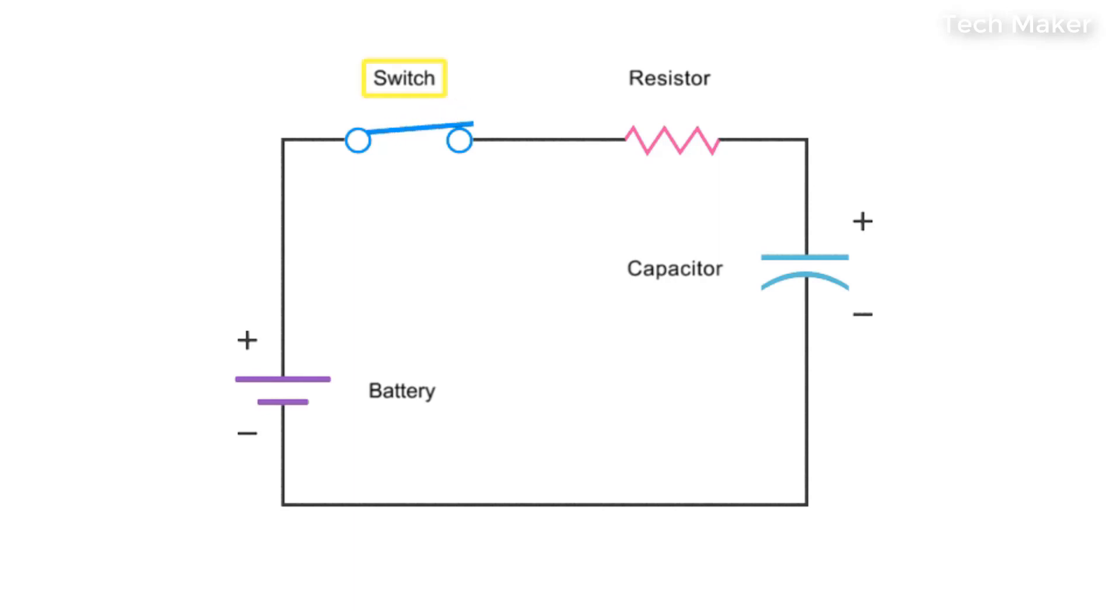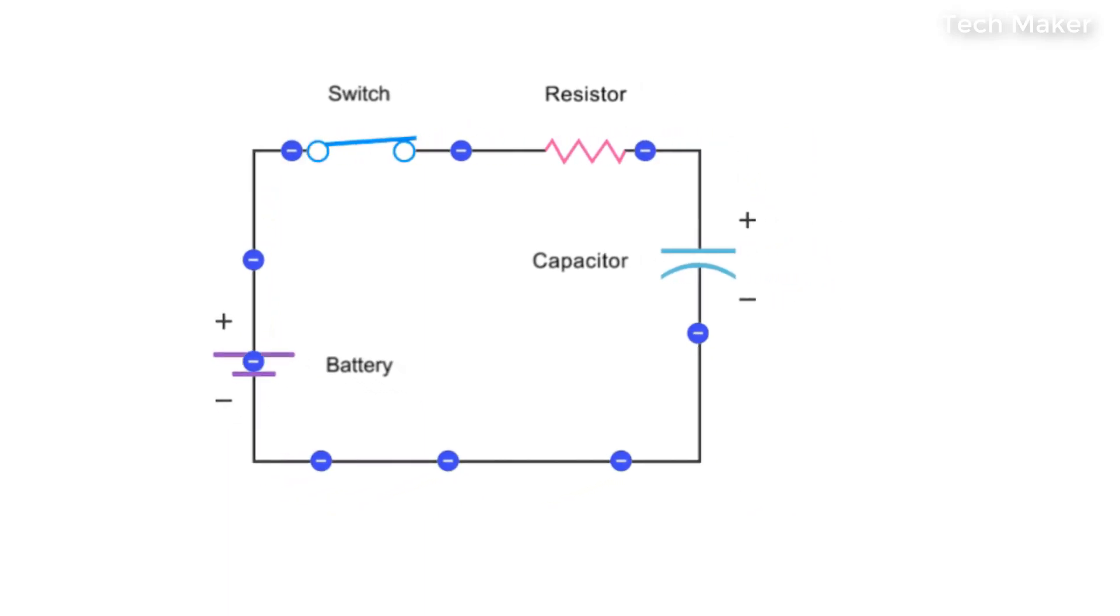When the switch is closed, electrons flow and charge builds up on the capacitor's plates. This causes the voltage across the capacitor to increase.